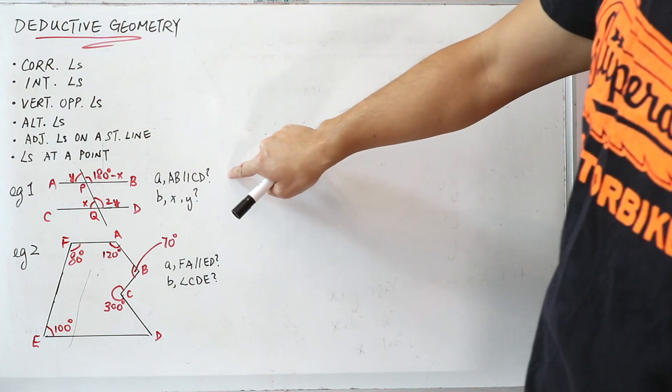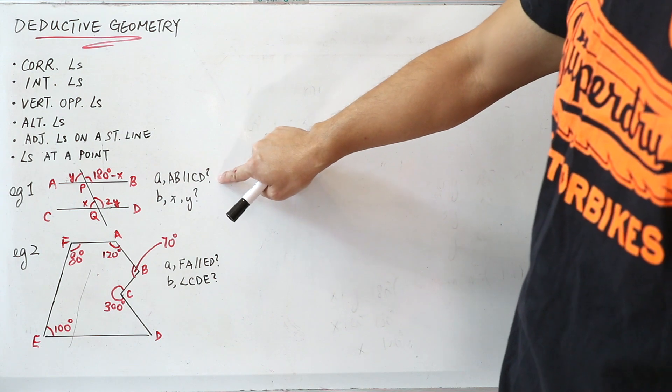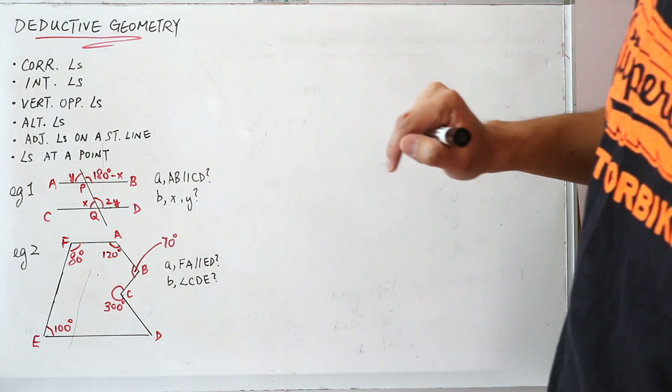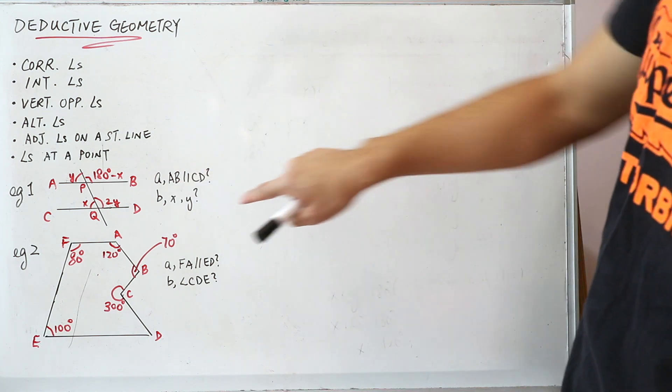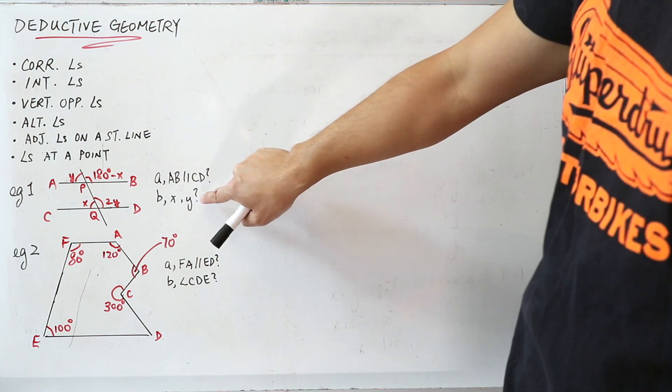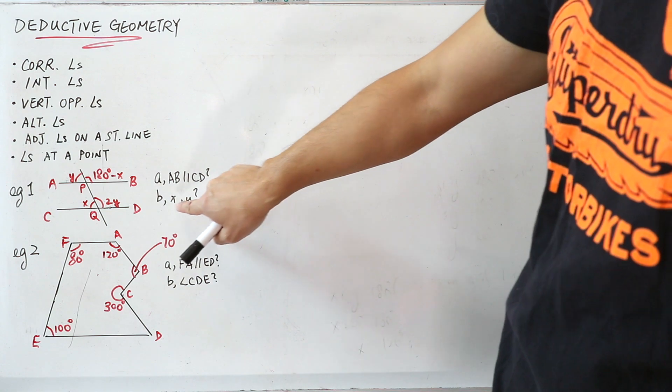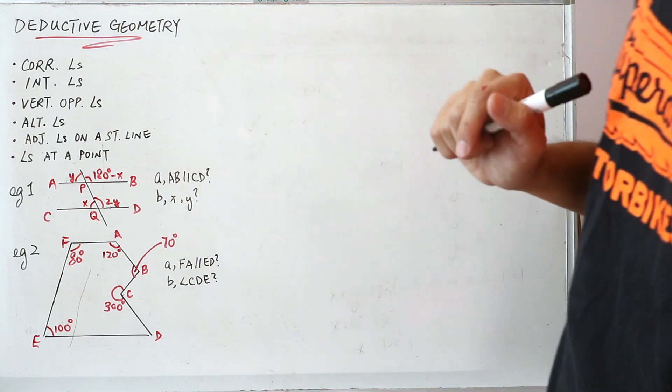In part A, you're asked whether AB and CD are parallel. In part B, you're asked to find the values of X and Y.